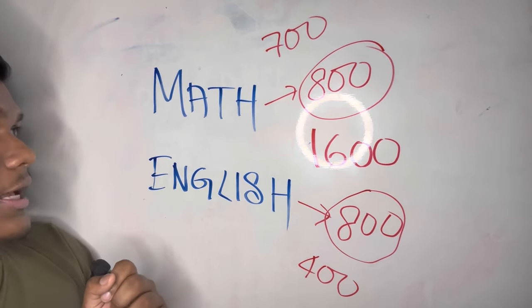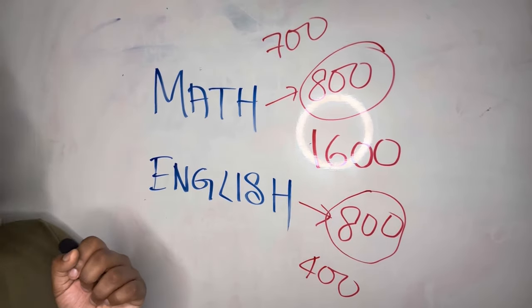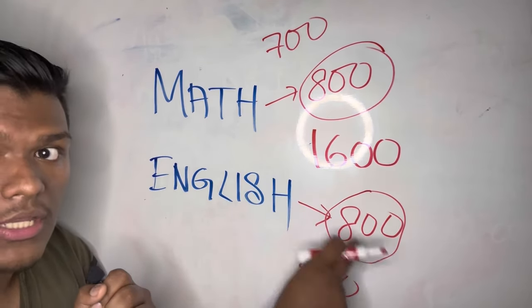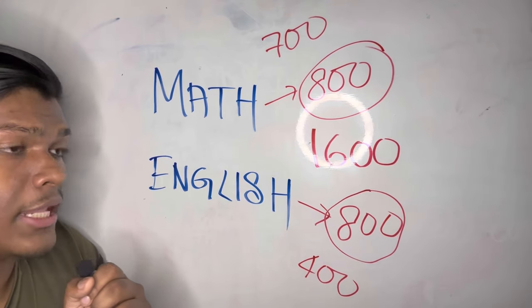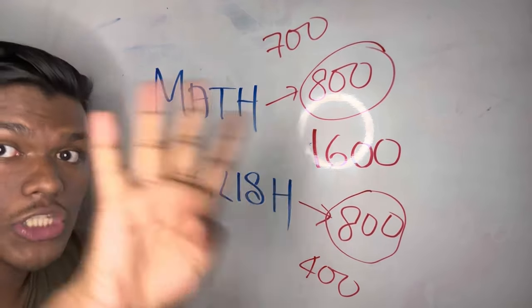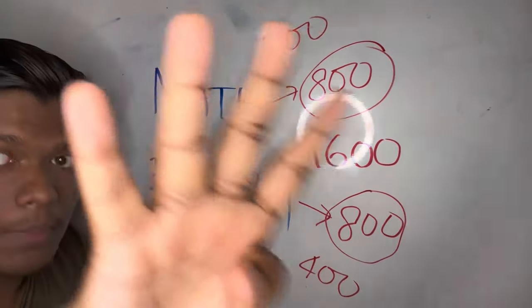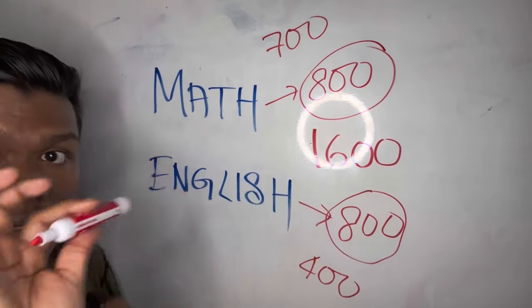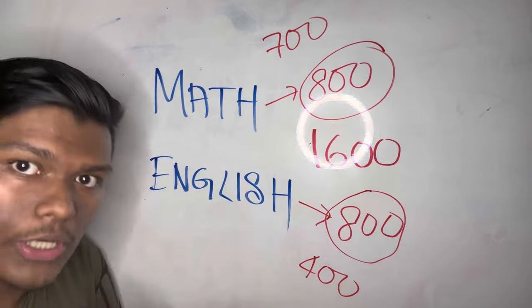As I wrote, math is 800 marks and English is 800 marks. Now you might think, are there only two papers then? No, there are 4 papers total. Previously there were five, but they reduced it by one, which I'll talk about.